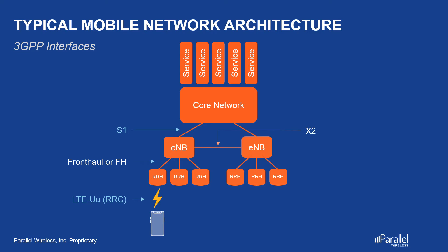The second interface to note is the X2 interface. Even though this interface has been defined by 3GPP, it is an optional interface. Many incumbent vendors intentionally did not implement this initially, and when they did implement it, they used many proprietary messages over this interface, thereby ensuring that multi-vendor networks were difficult for an operator to deploy.